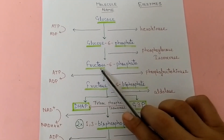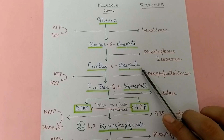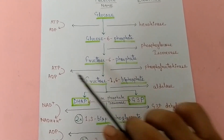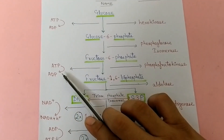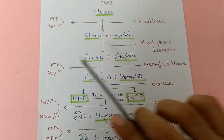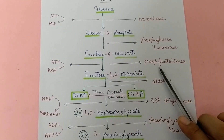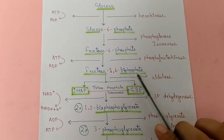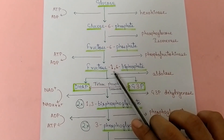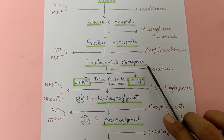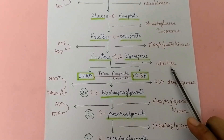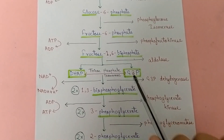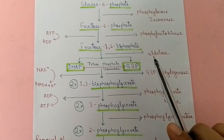Then we convert fructose-6-phosphate into fructose-1,6-bisphosphate with the expenditure of a single ATP and with the help of enzyme phosphofructokinase. Then we break fructose-1,6-bisphosphate with the help of enzyme aldolase into two 3-carbon containing compounds.